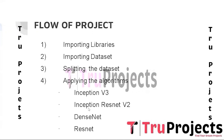The second algorithm is Inception ResNet V2, an extension of the Inception architecture that incorporates residual connections inspired by the ResNet architecture. The residual connections allow the network to learn residual features, making it easier to train very deep neural networks. This combination of Inception and ResNet concepts results in a powerful architecture with improved performance.